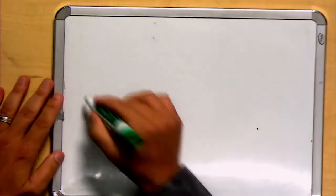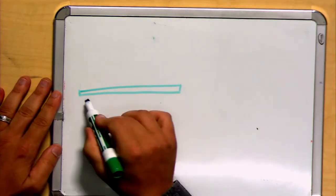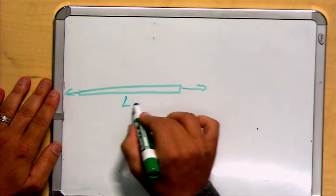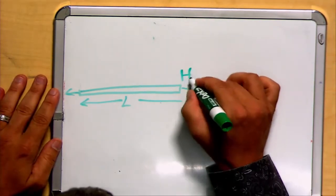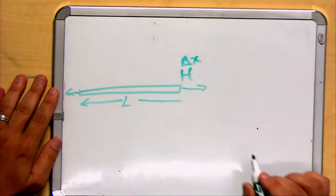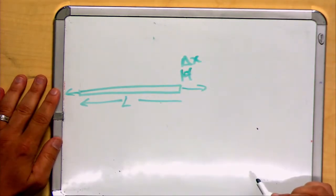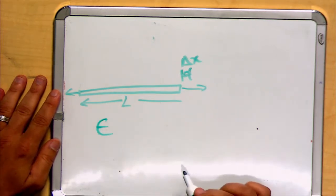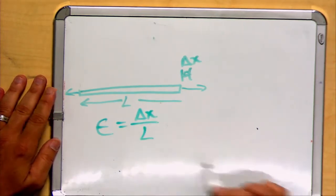Similarly, we defined axial strain by looking at the total length between the application of two forces and how much change there was, delta L. In this case I'm calling it delta x to distinguish it from changes in the y direction. We defined our strain, epsilon, as being this change in length divided by the overall total length.